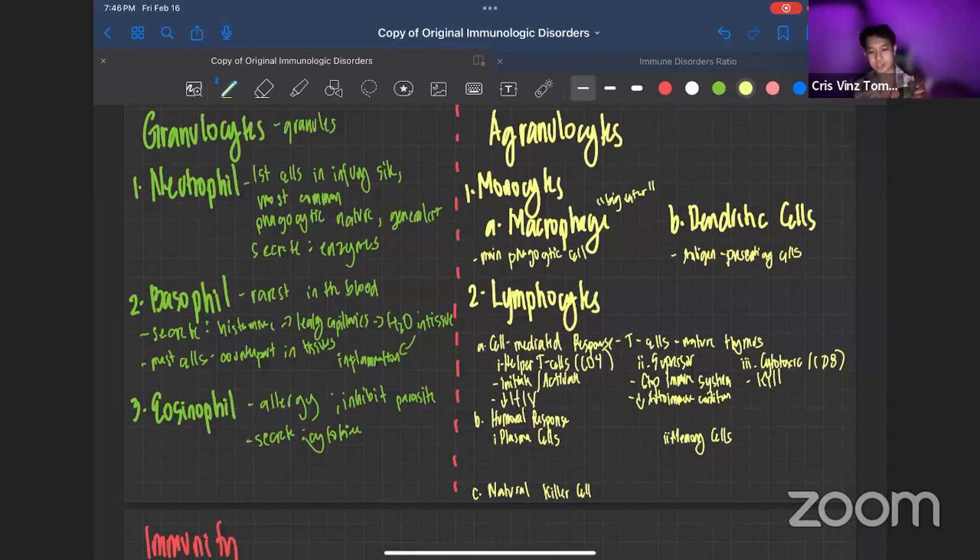We also have the humoral response. If in cell-mediated response we have T-cells, in humoral response we have our B-cells.